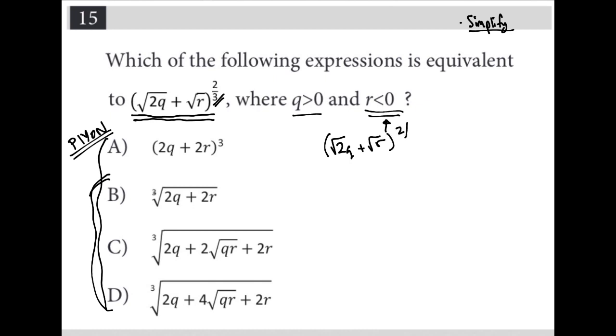So what I decided to do is to take the original expression. So my square root 2Q plus root R to the two-thirds power. And just to convert that exponential form into a radical form. So the 3 in the denominator here becomes a type of root. This becomes a cube root. And then I still have my 2Q. Don't forget the square root around that. Plus square root R, close parentheses. And then the numerator from this fraction becomes a power. So this is a square here.